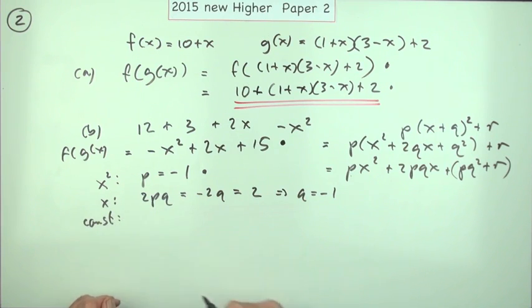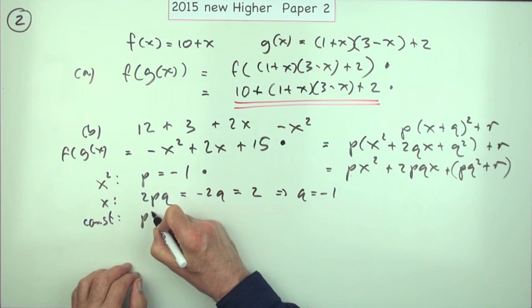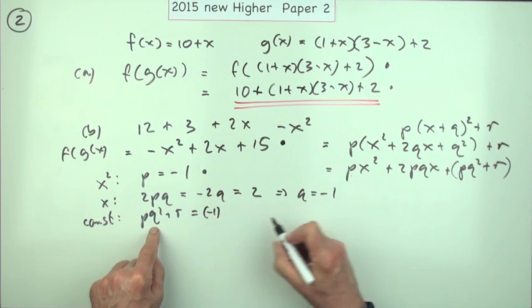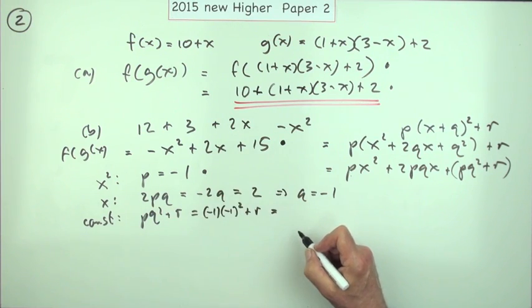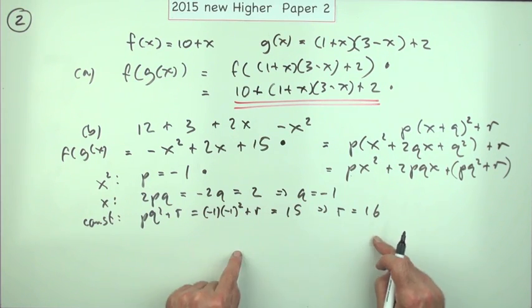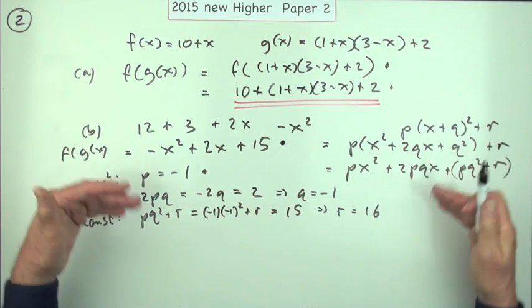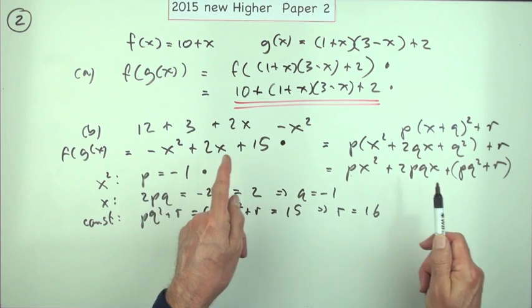That says constant, now compare the constant terms. pq²+r. Oh dear, pq²+r. Well now I know p is negative one, q is negative one, q is negative one and that's squared, plus r should equal 15. Well that's one, negative one, so take it across and add it, means that r is equal to 16. And you still don't get the mark because you have to put it back into the original form because it asks you to express it like this. So it's a much longer way, but it is a very precise technique, comparing corresponding coefficients.